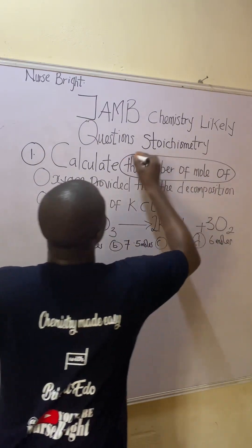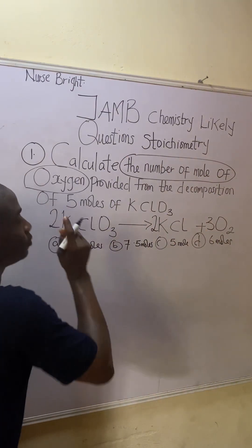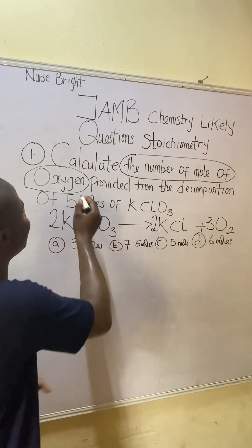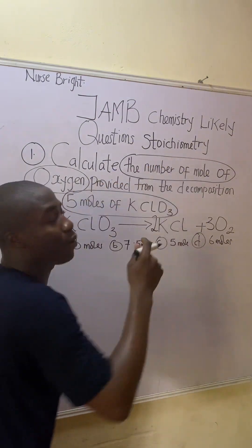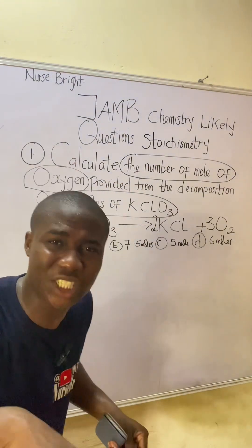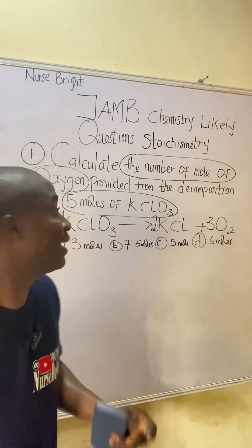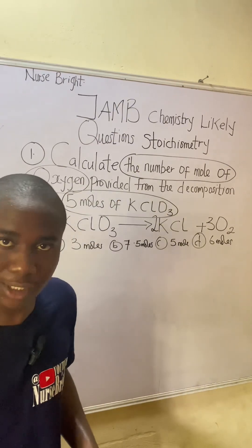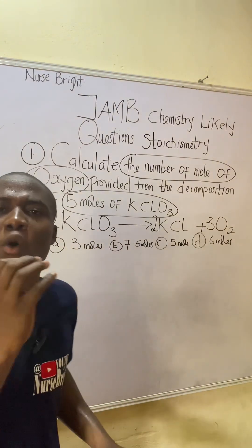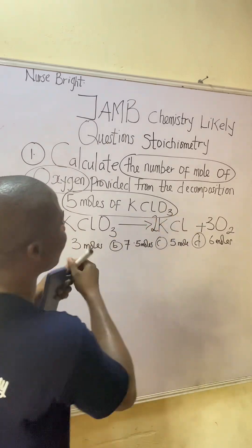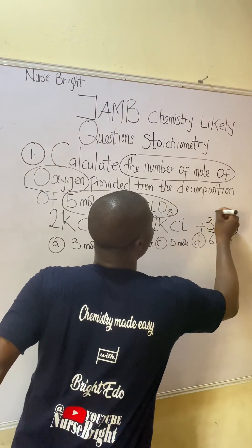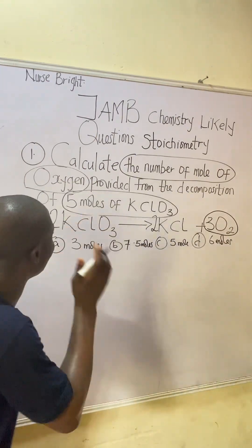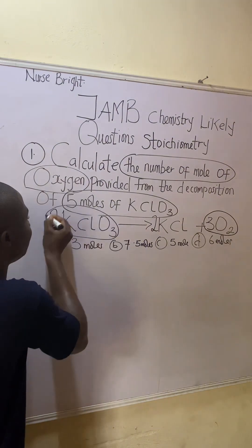In this question, they said calculate the number of moles of oxygen — so this is what we are asked to look for: the number of moles of oxygen, provided from the decomposition of five moles of KClO₃. They give us a value for KClO₃. When we've identified these, we'll go back to our reaction, because with that reaction we'll be able to solve this question.